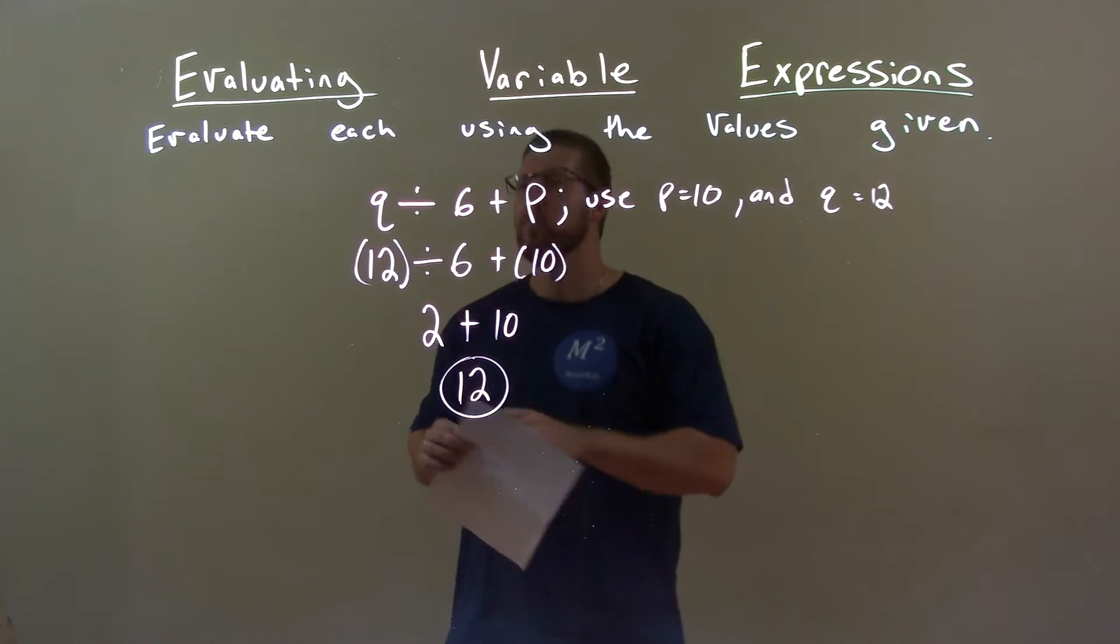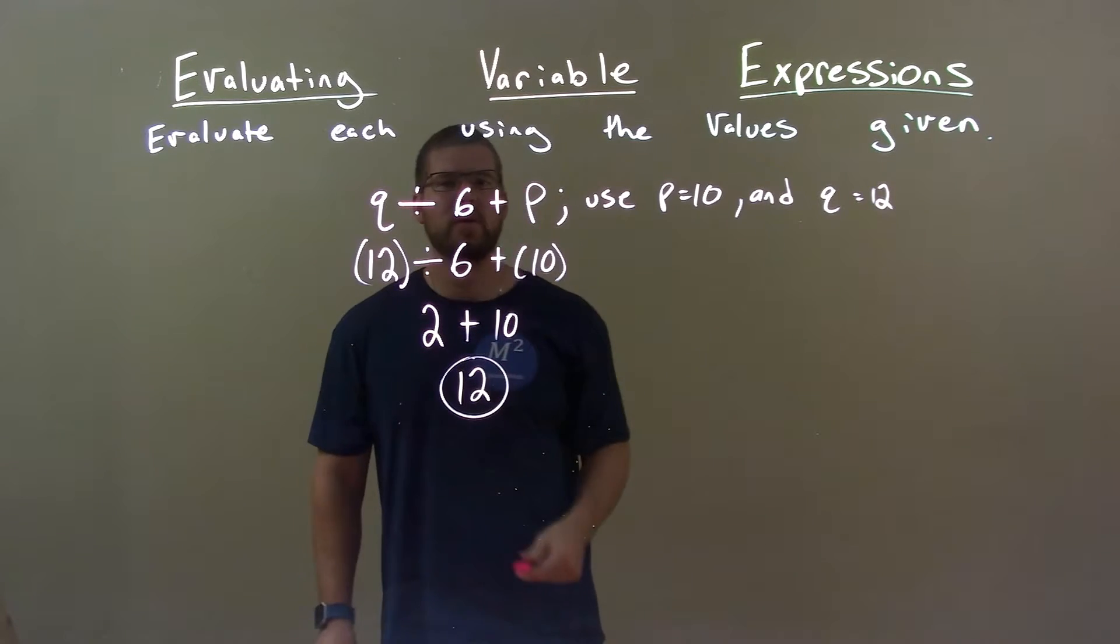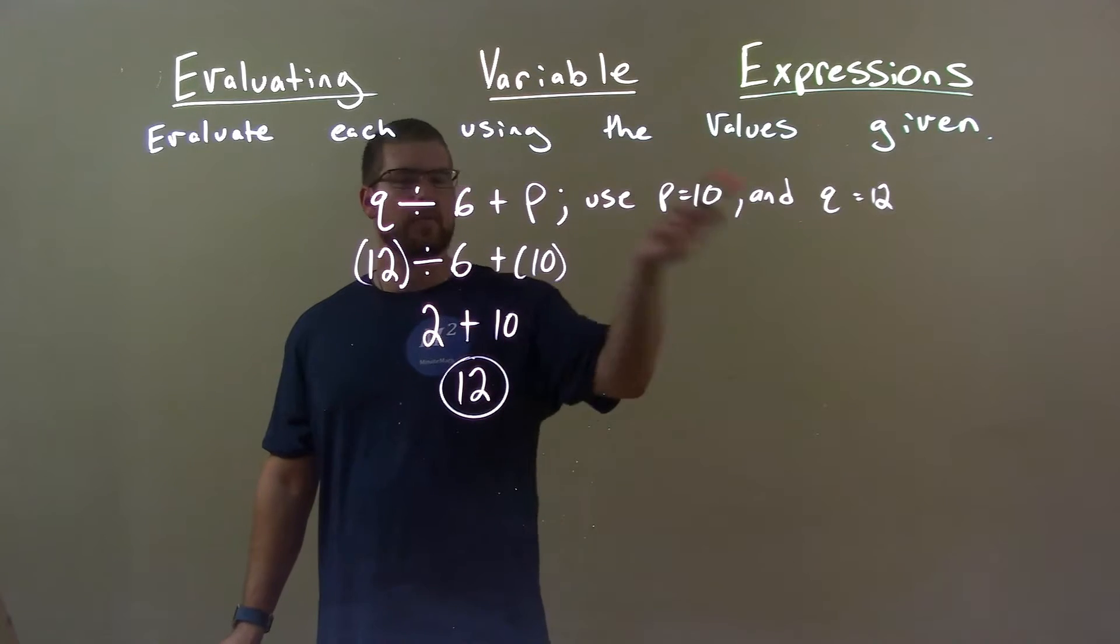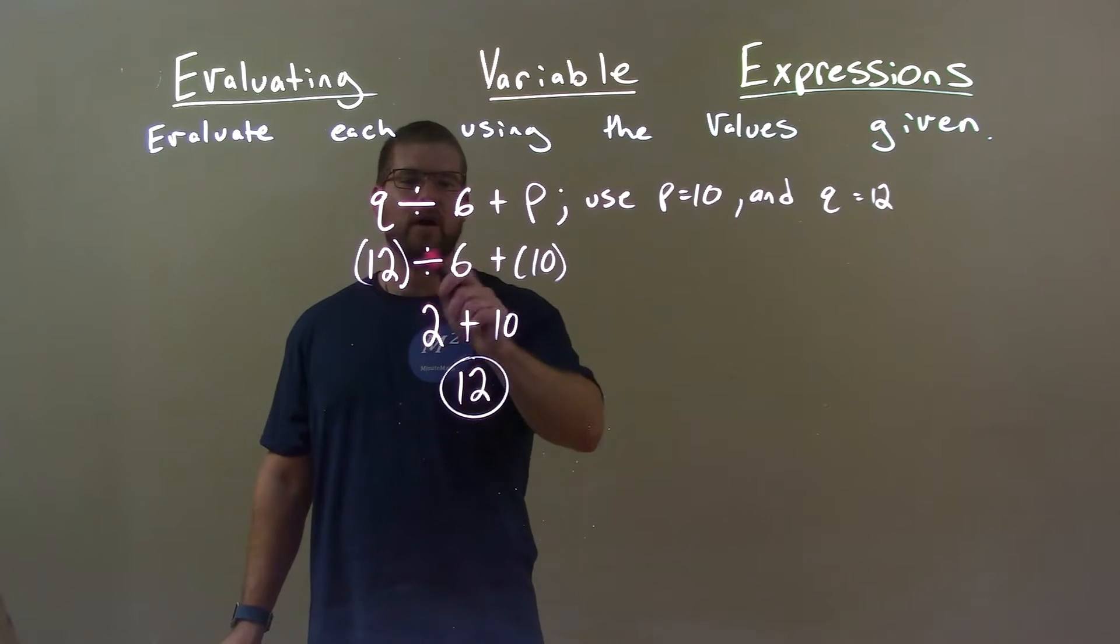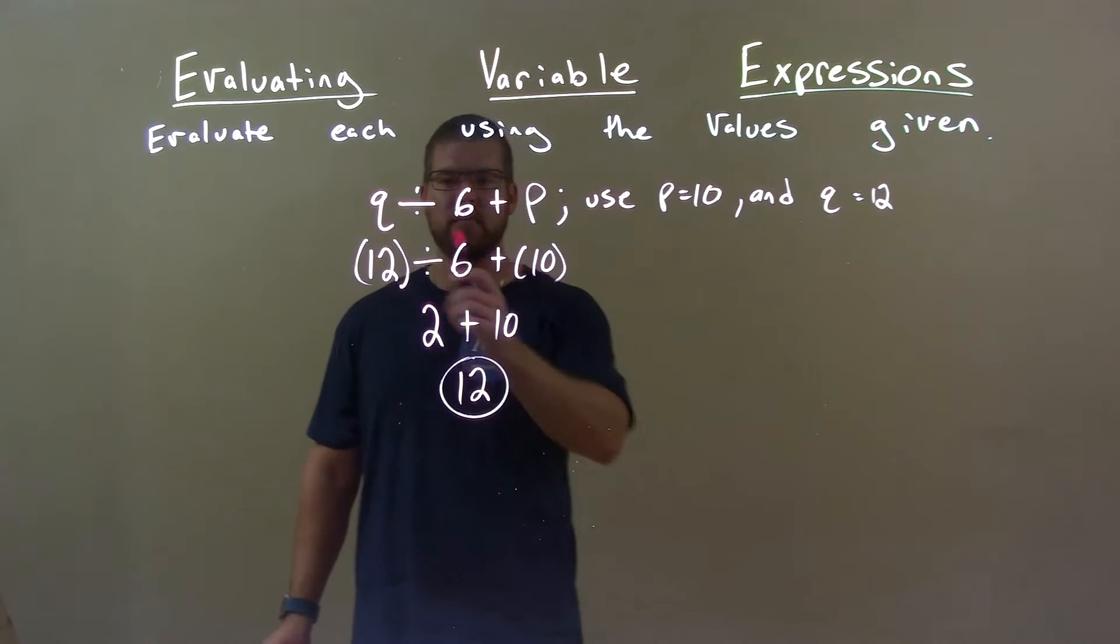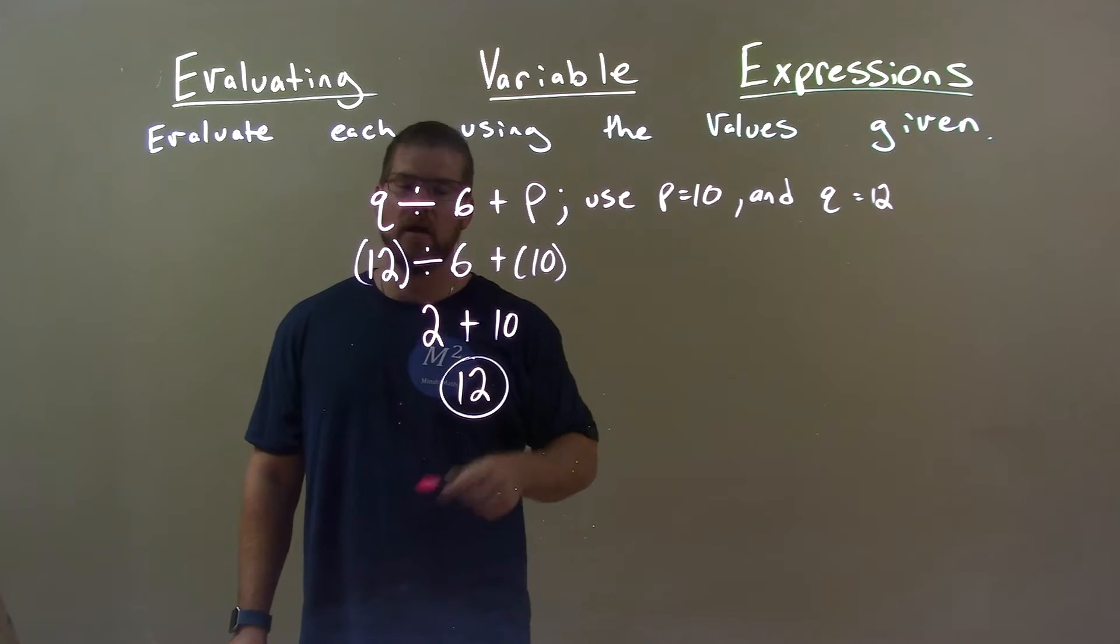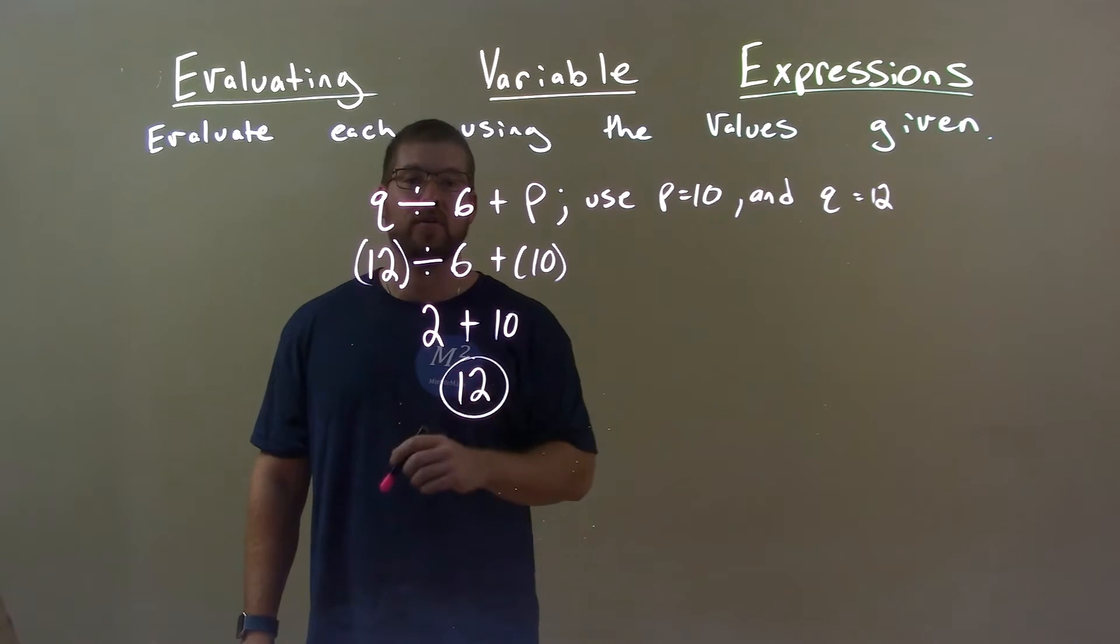Quick recap. We're given Q divided by 6 plus P, and we're using P equals 10 and Q equals 12. Well, substitute them in and we have 12 divided by 6 plus 10. Division first, 12 divided by 6 is 2. Then we added the 10. So again, final answer is just 12.